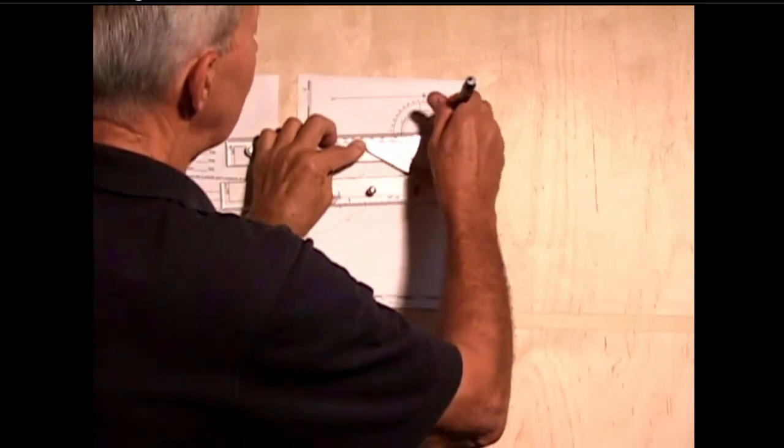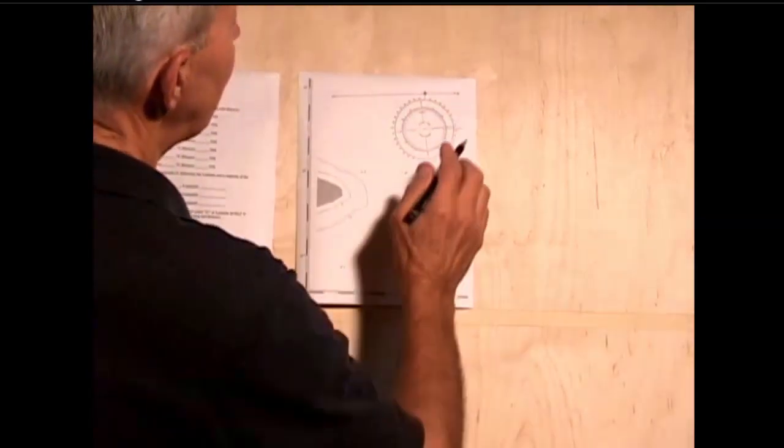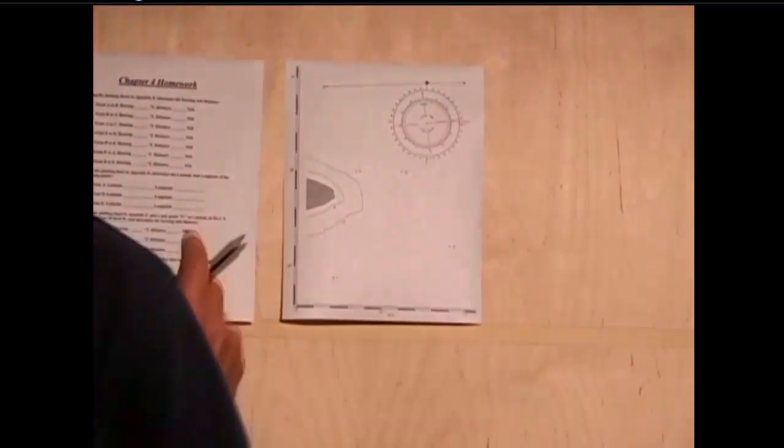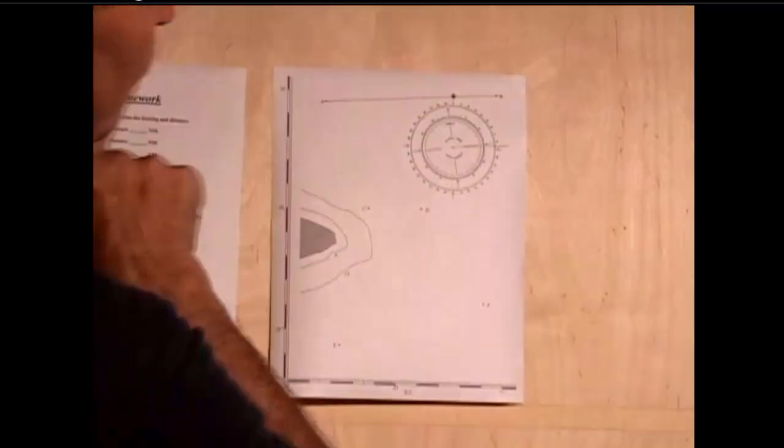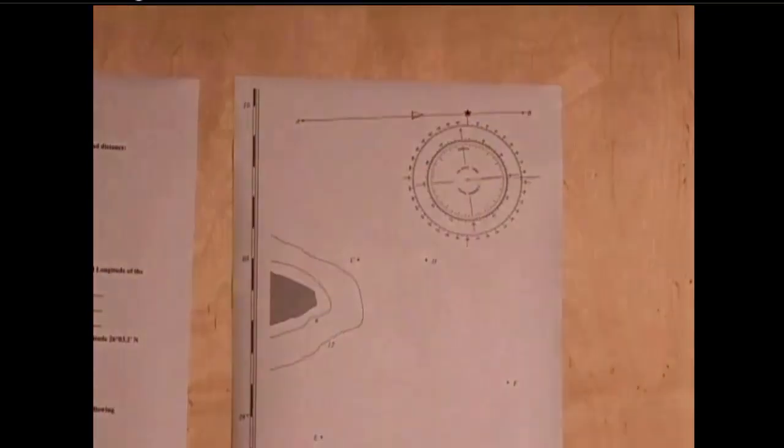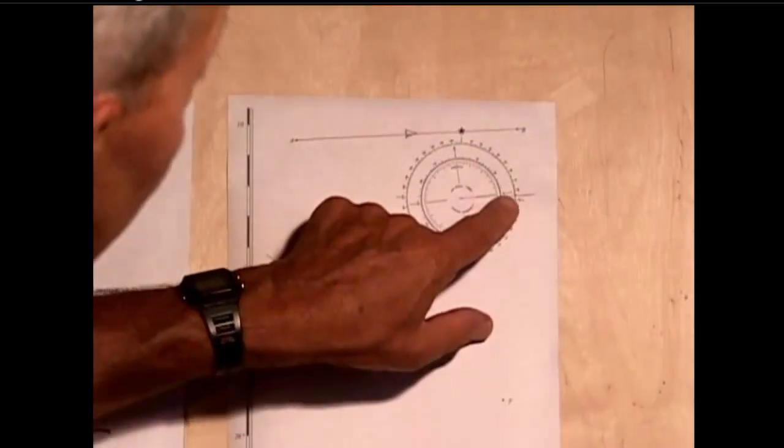And check that. And we find out that the bearing from A to B—remember we're traveling from left to right, we're traveling in that direction—is shown here.